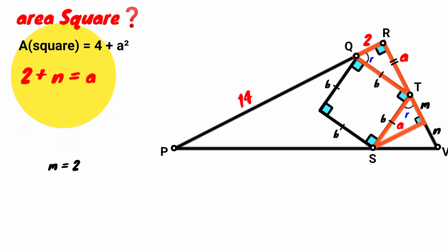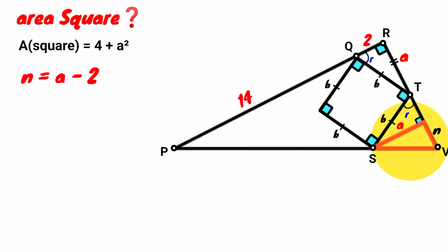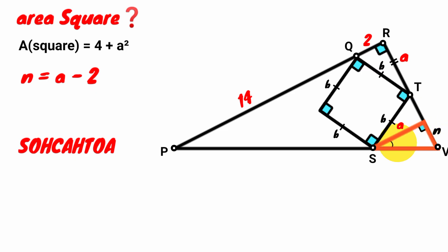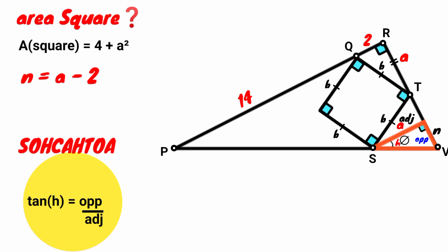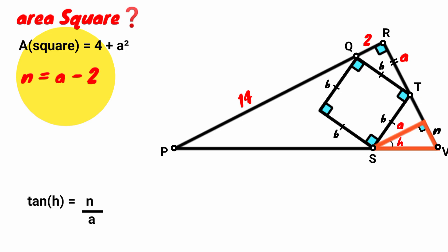Substituting M equals 2: 2 plus N equals A, so N equals A minus 2. Now for this right angle triangle, we use trigonometry. Taking this angle as theta (which is H), this side is the opposite and this is the adjacent. So tan H equals opposite over adjacent, which is N over A. Since N equals A minus 2, we get tan H equals (A minus 2) over A.